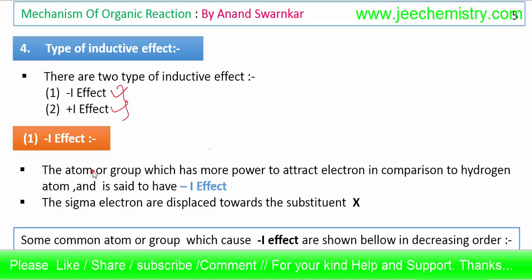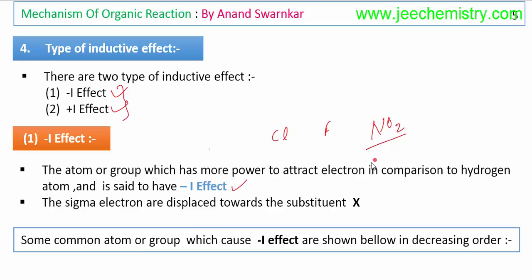The atoms or groups which have more power to attract electrons in comparison to hydrogen atoms are said to have minus I effect. Atoms like chlorine, fluorine, iodine, and NO2 have more power to attract electrons than hydrogen, so these atoms are called negative inductive effect groups and they produce a negative inductive effect in a compound.